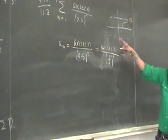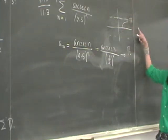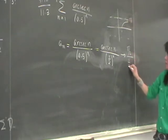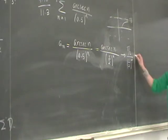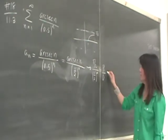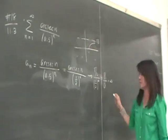That's correct. Arc secant of n, as n becomes large, goes to pi over 2. And then you have half to the infinity, but half to the infinity is 0, because it's 1 over 2 to the infinity. Pi over 2 over 0 is what? It's infinite, which is not equal to 0.